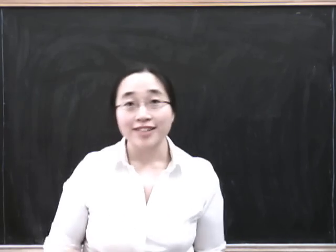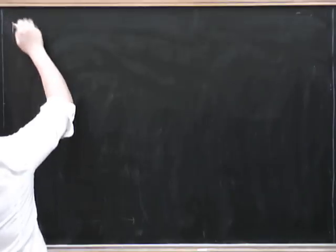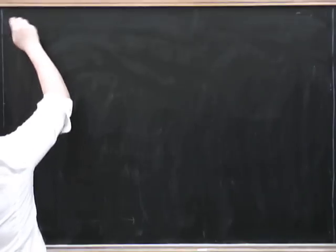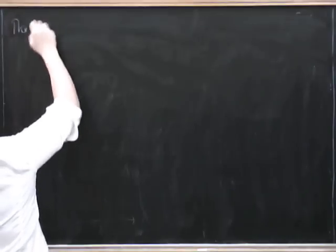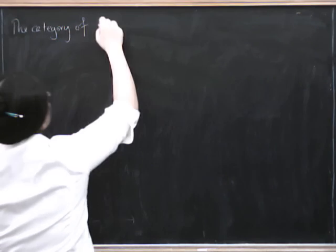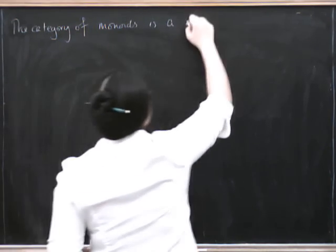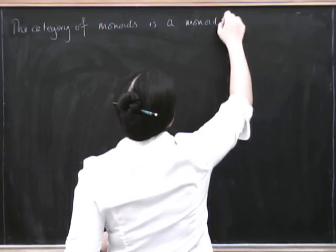So first of all, let's have a look at the monoidal category of monoids. We show that the category of monoids is a monoidal category under Cartesian product.